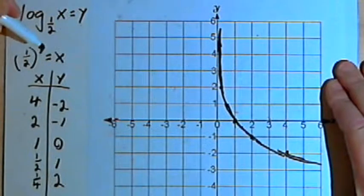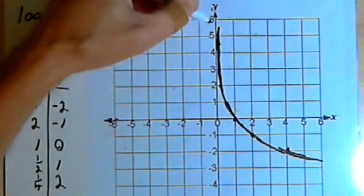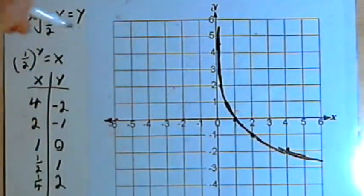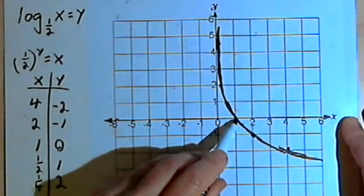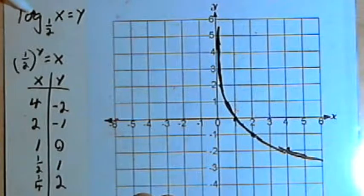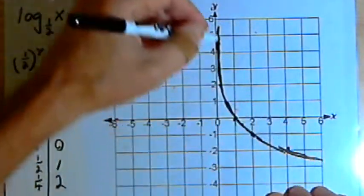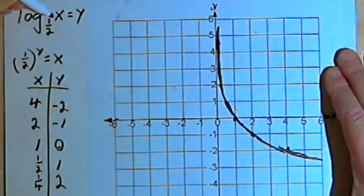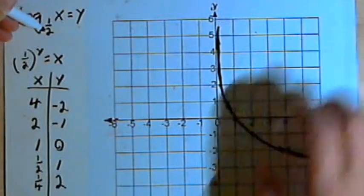The domain and range, just as we saw for the other function: the domain will be from 0 to infinity, or all positive numbers, and the range — since it goes up to positive infinity and down to negative infinity — will be all real numbers. The x-intercept is at (1, 0). For a logarithmic function where the base is between 0 and 1, you'll have a decreasing function, but the other characteristics remain the same regardless of the base, as long as there are no major transformations.